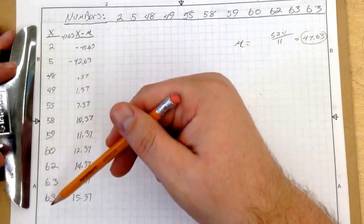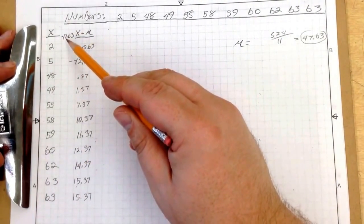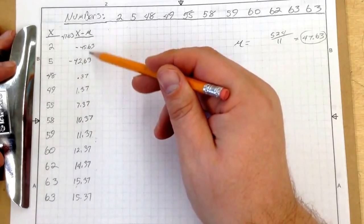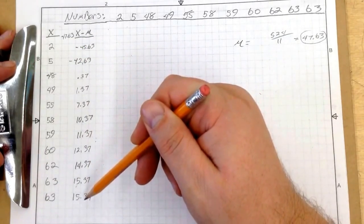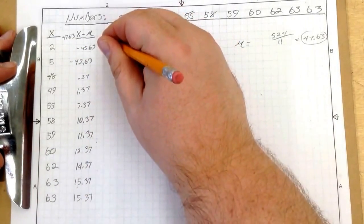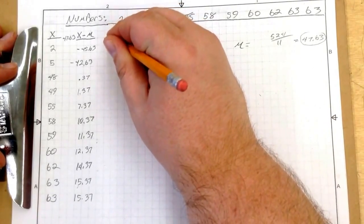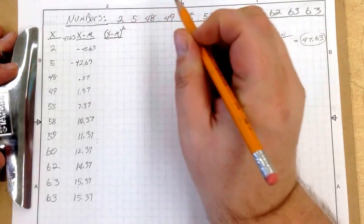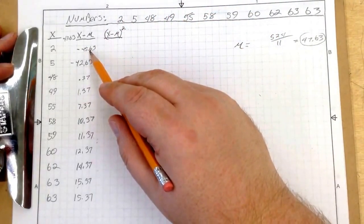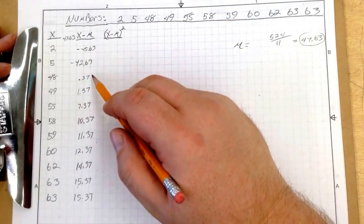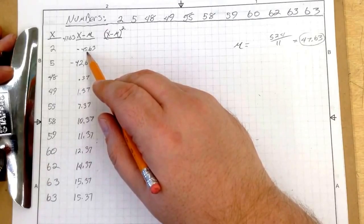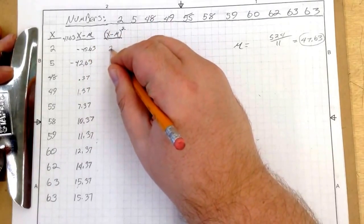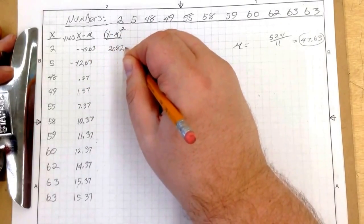So we've got our x. We subtracted our mean just like we saw in the equation. And this is x minus mean. Now the next step that we have to do is x minus mean squared. So what this means is we simply square this number and put it over there. So 45.63 squared is 2082.09.